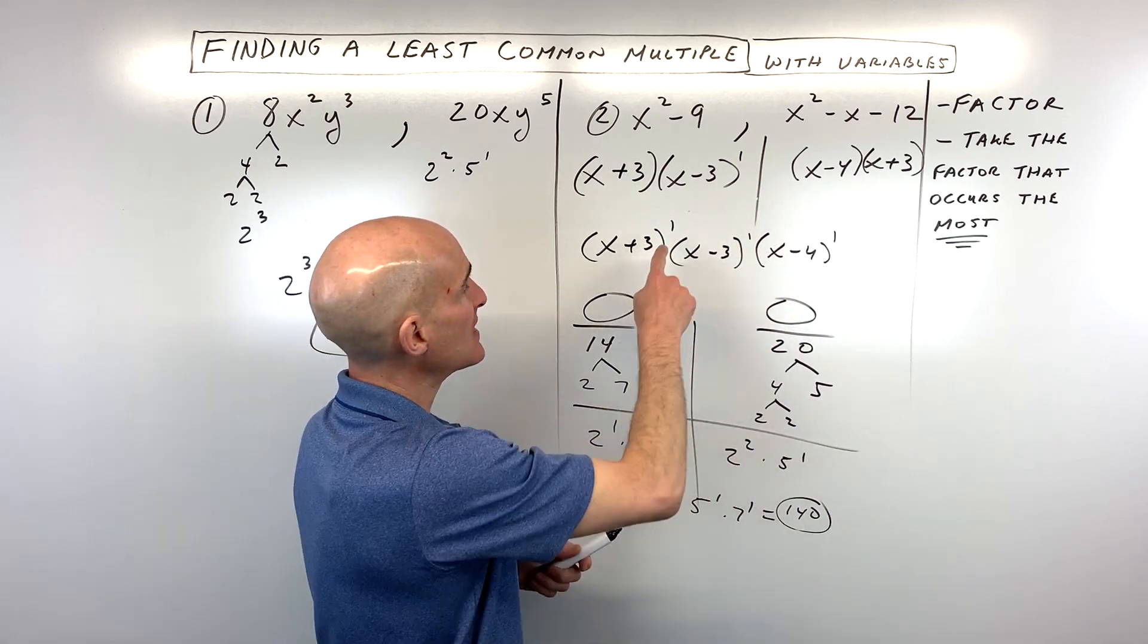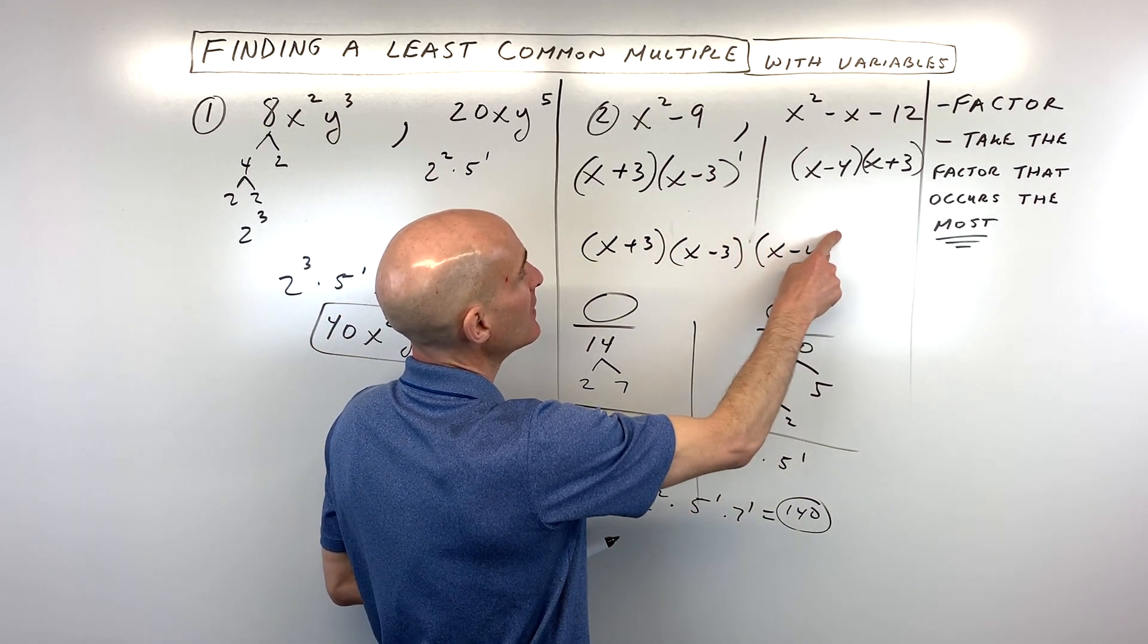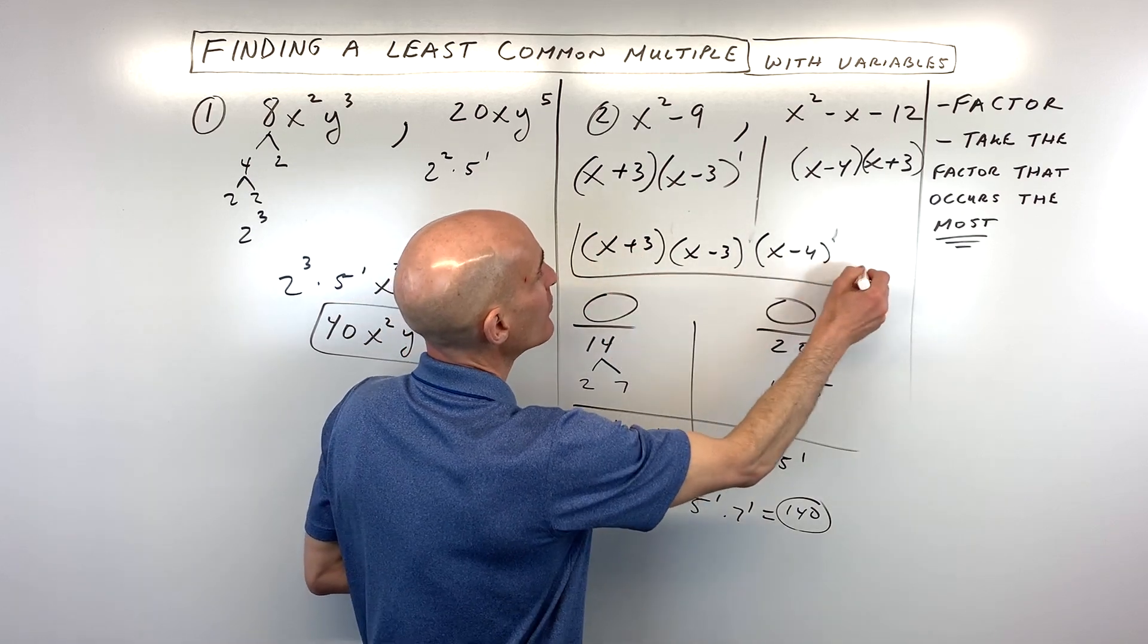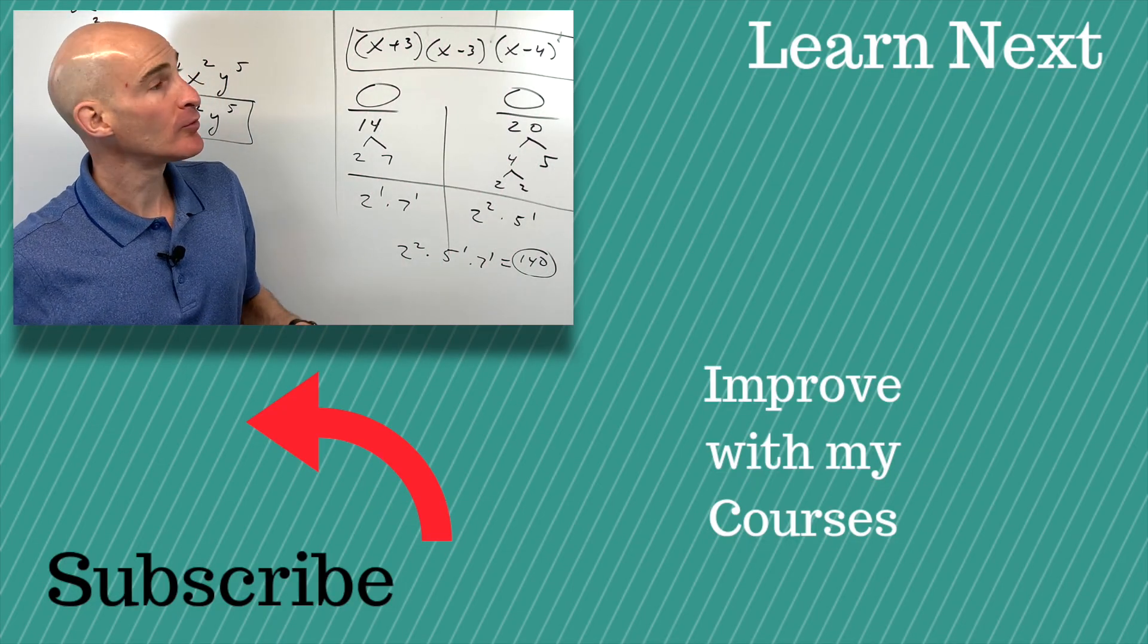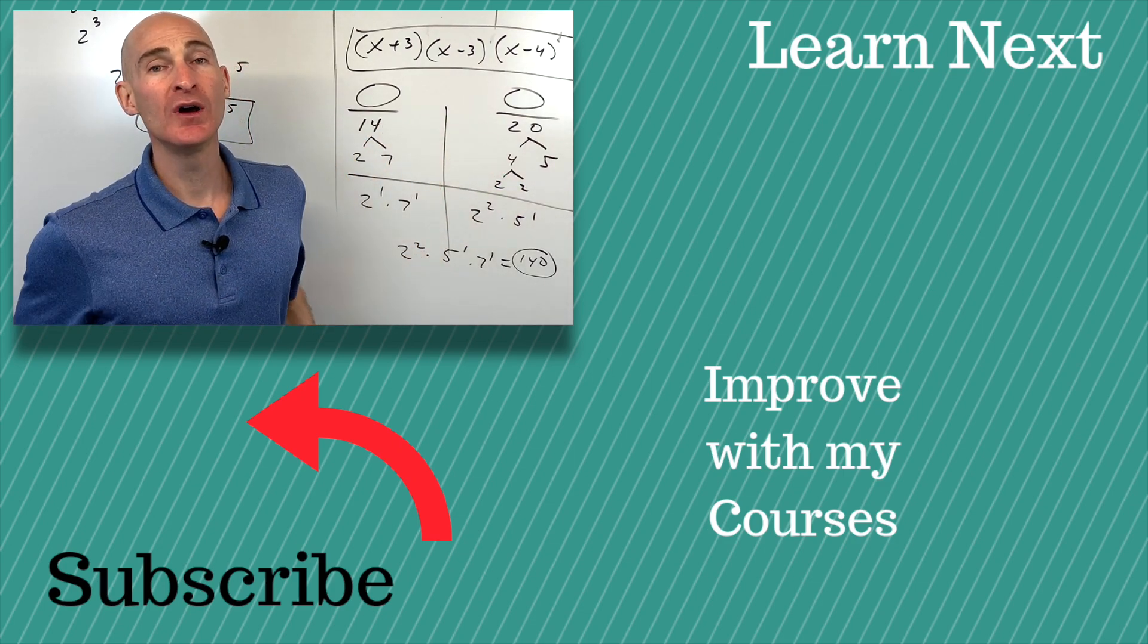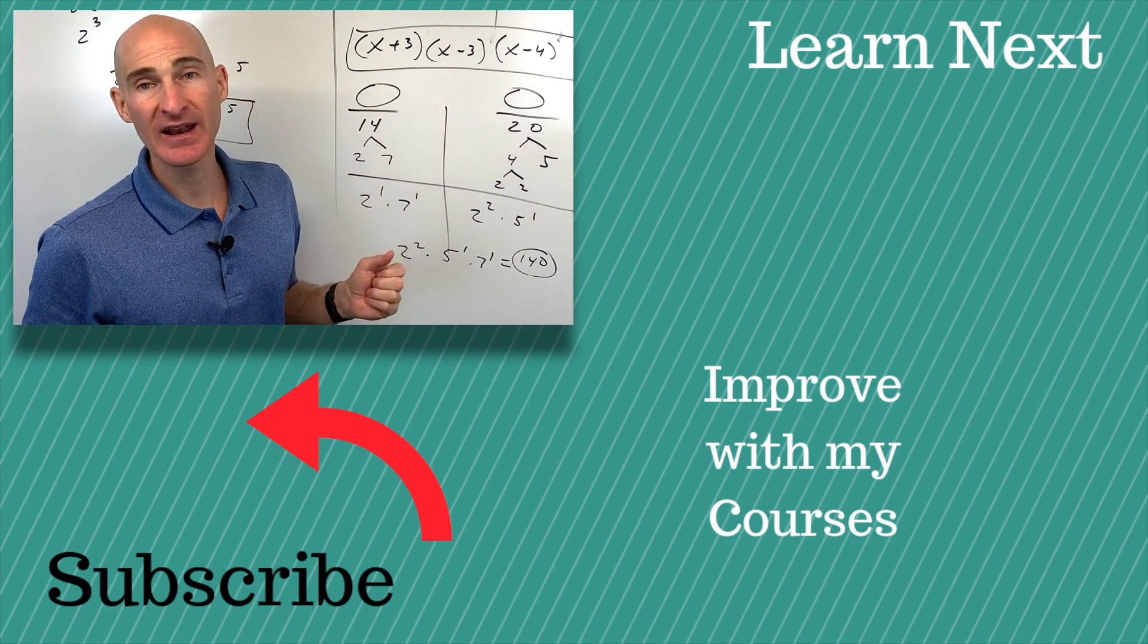Now I don't have to write these 1s here because anything to the first power is itself, but just to show you, all these multiplied together represents the lowest common multiple or the common denominator if you're trying to combine these into a fraction with a common denominator.